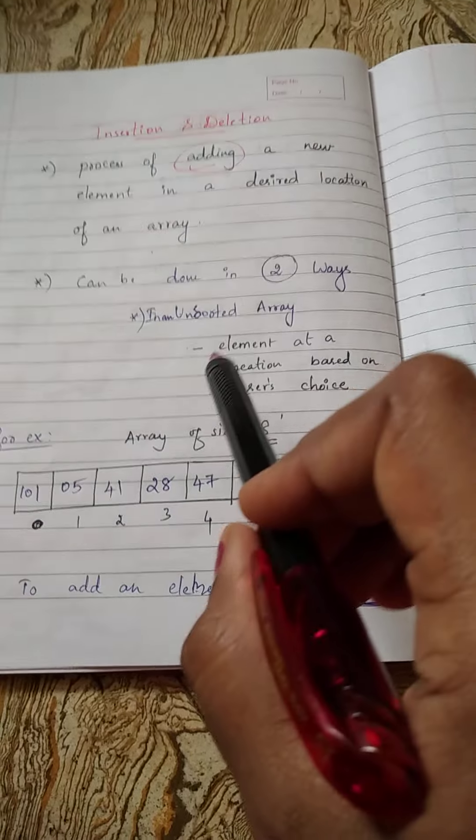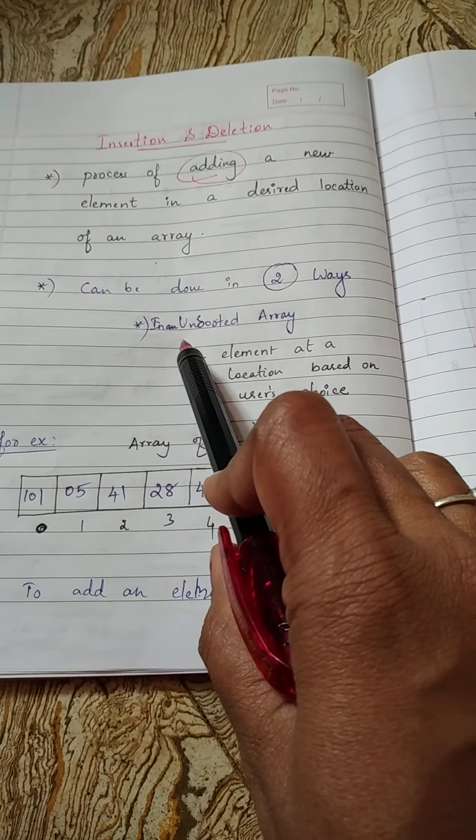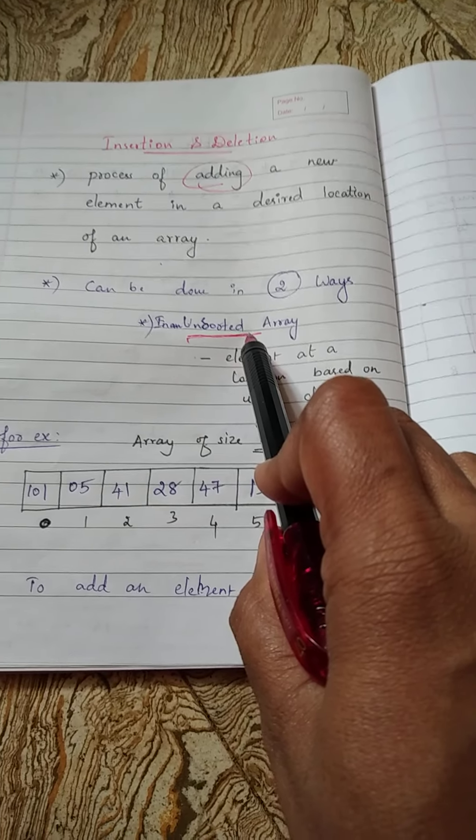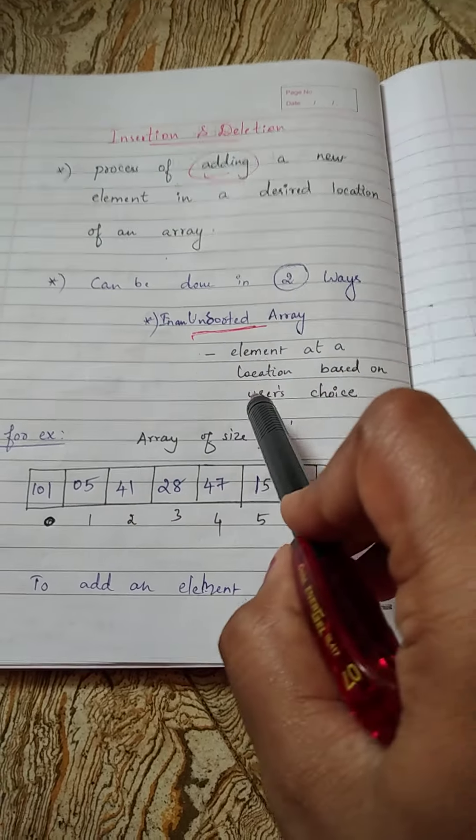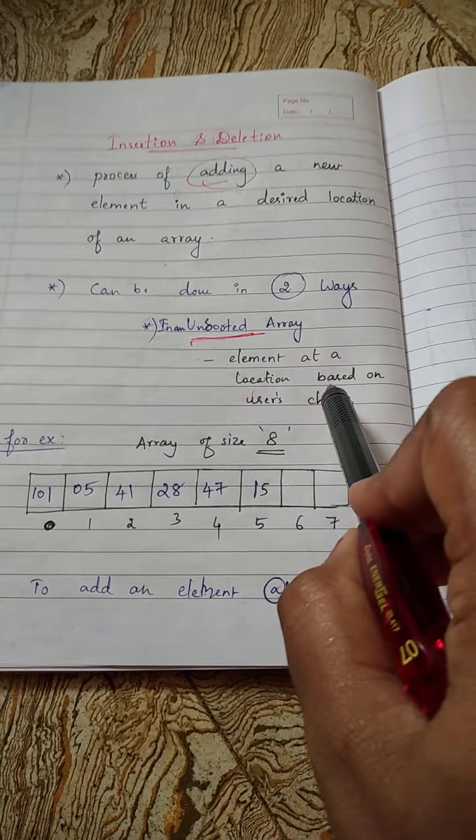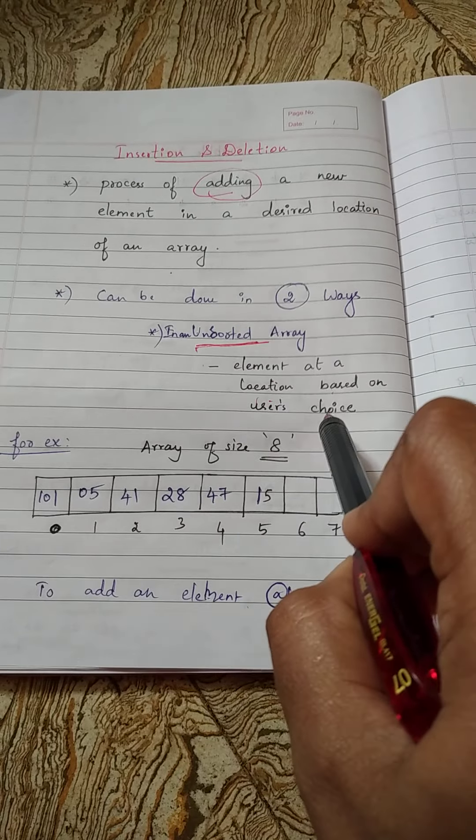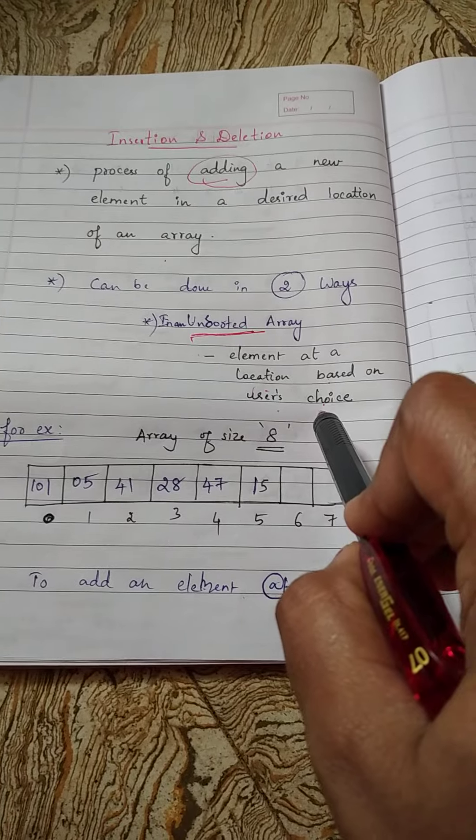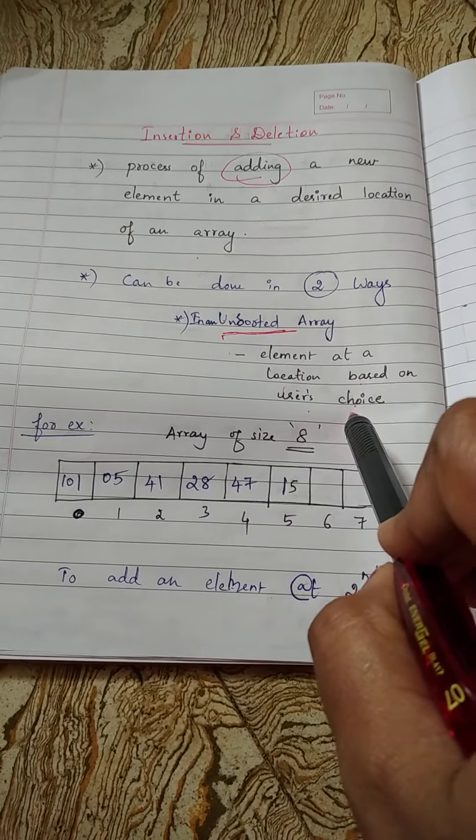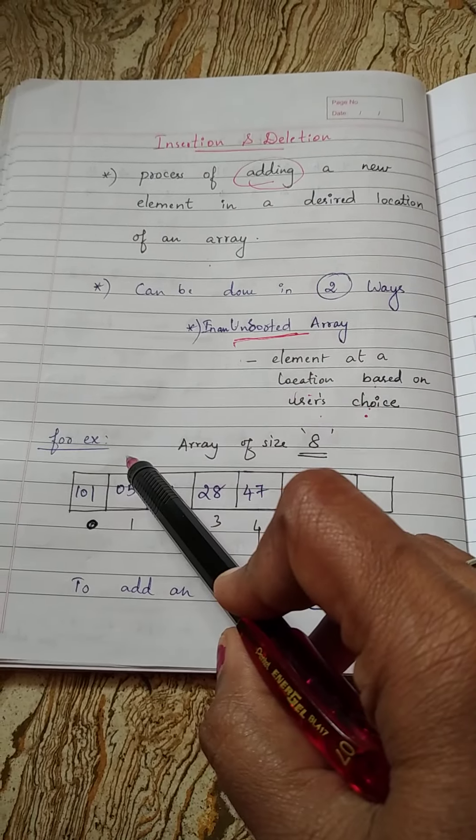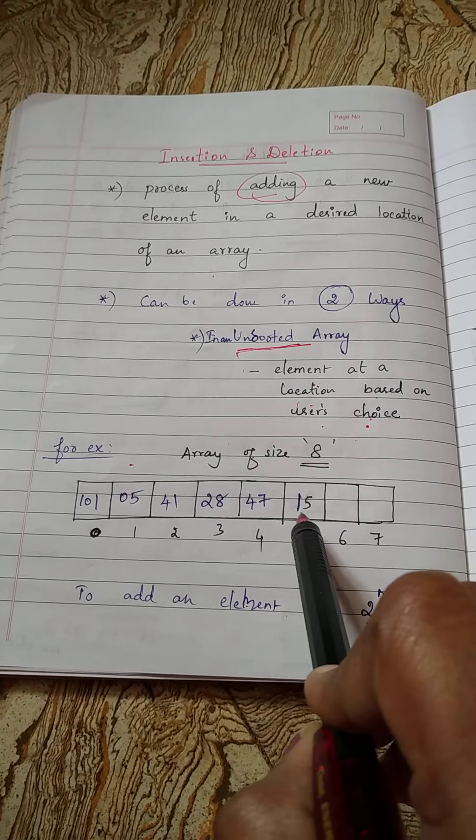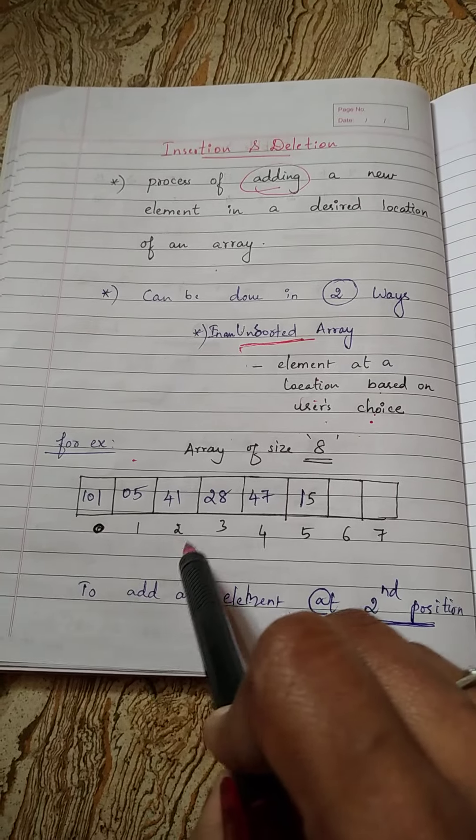For example, case 1: if you are having an unsorted array, you can insert an element at a location based on user's choice, which means you may ask the user where they want to insert an element. Imagine a situation here: an array of size 8 elements. See index 0, 1, 2, 3, 4, 5, 6, 7.